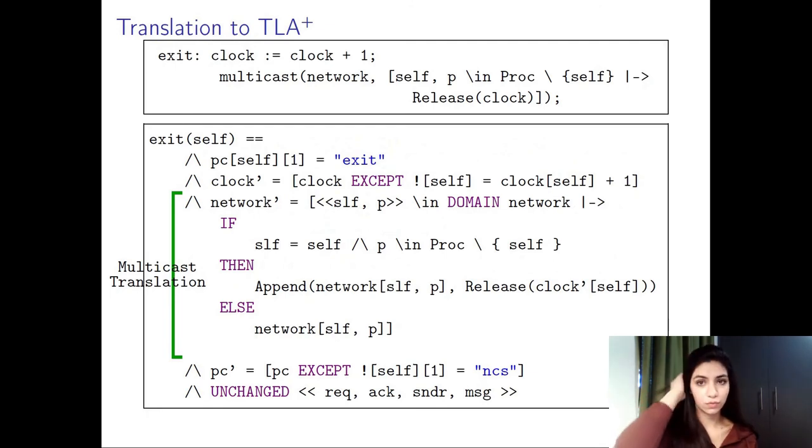Here is a piece of translation produced by our own translator. This is the same exit atomic step that we discussed before when a process exits the critical section and releases a message for all other processes, notifying them that the critical section is now released. The first thing to pay attention to is the fact that the PC variable also references the number one here, which means that we are in the first subprocess. These lines represent the translation of a multicast operation when invoked with a FIFO channel, and we can see the PC prime variable also takes into consideration which subprocess we are in.